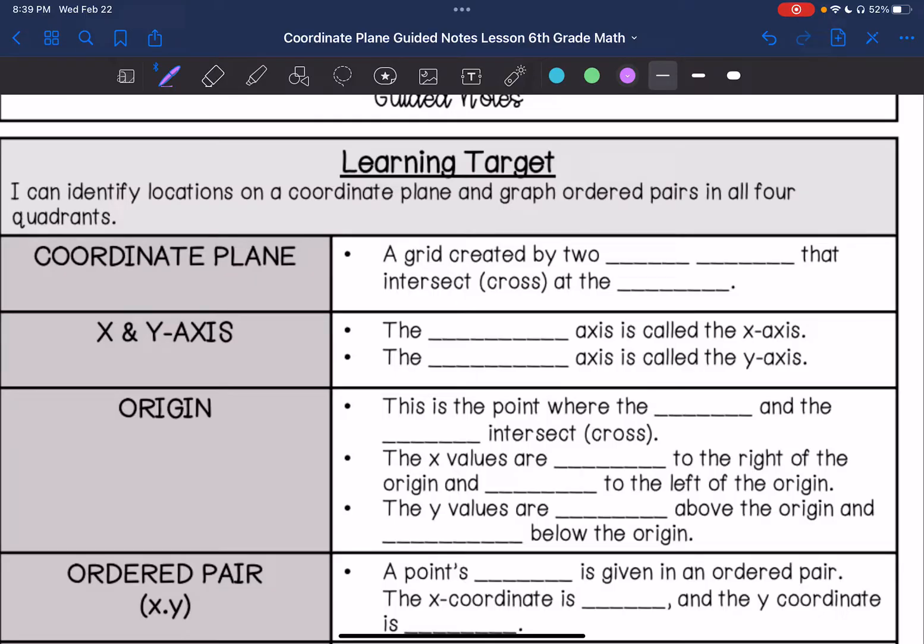A coordinate plane is a grid created by two number lines that intersect or cross at the origin. And we will talk about what the origin is in a little bit.